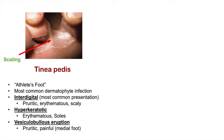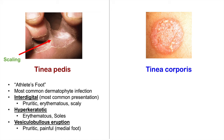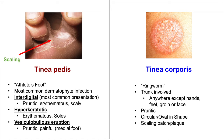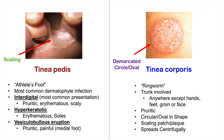The next one is tinea corporis, also known as ringworm. This affects the trunk — basically anywhere on the body except the hands, feet, groin, or face. It is also pruritic, and as you can see in the image, it is circular or oval in shape. It presents as a scaling patch or plaque — a patch being a flat lesion greater than one centimeter, and a plaque being a raised lesion greater than one centimeter. It spreads centrifugally, meaning from the inside outward, continually getting larger. It appears as a very well-demarcated circle or oval with a scaling patch or plaque.